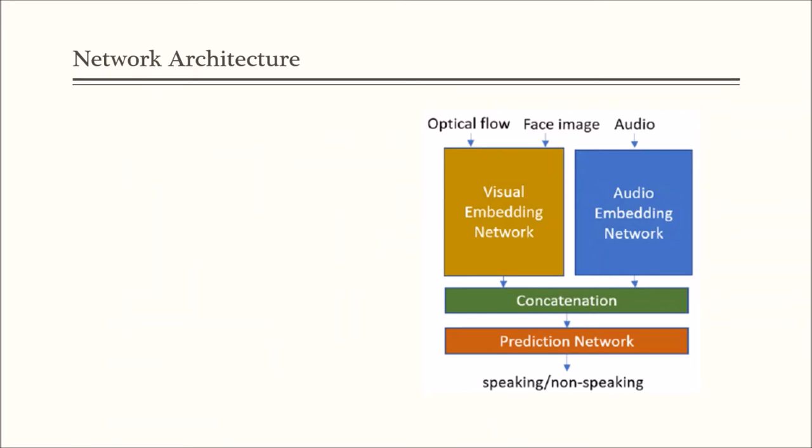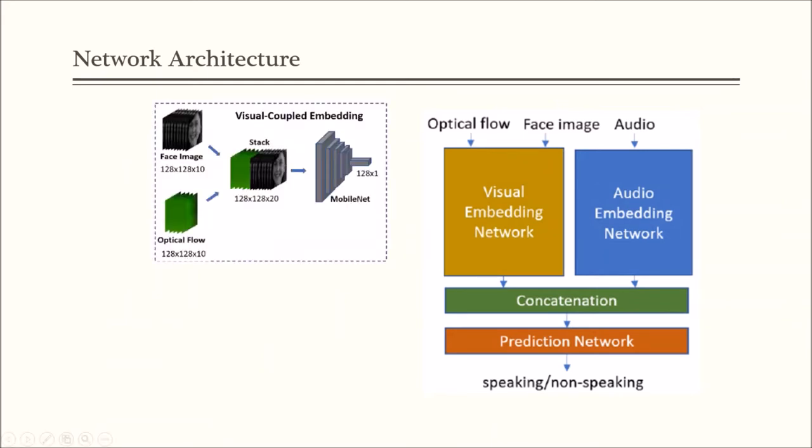The output is a binary label: speaking or non-speaking. To fuse face image and optical flow, we apply two architectures of visual embedding networks: visual-coupled embedding and independent embedding. For the visual-coupled embedding, we extract the optical flow from the consecutive face images, and then stack both the face images and optical flow together and feed them into the MobileNet.